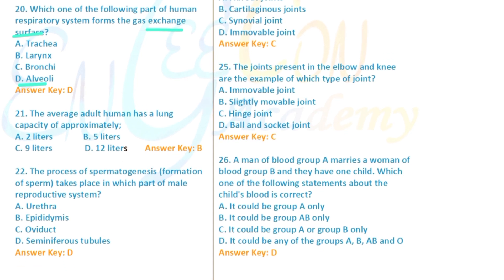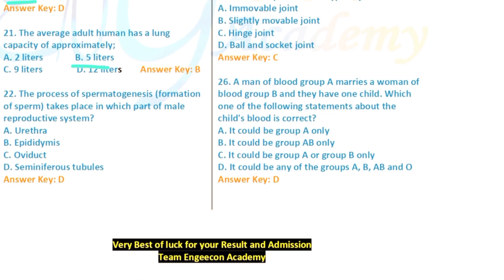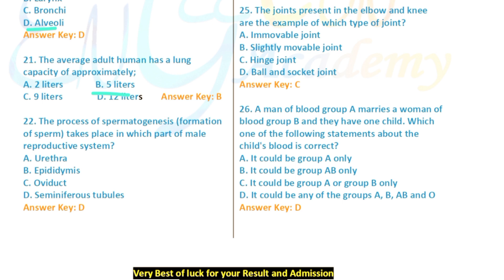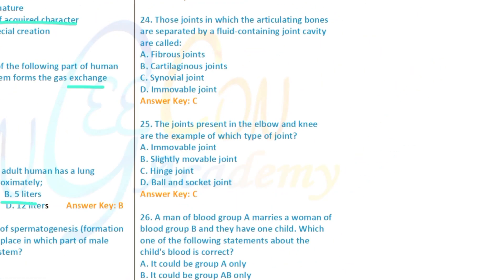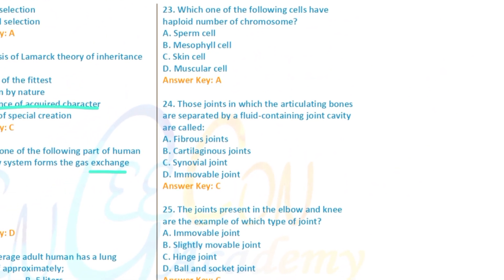The average adult human has a lung capacity of approximately 4–5 liters. Question: The process of spermatogenesis — sperm formation — takes place in which part of the male reproductive system? The answer is the seminiferous tubules, which is ticked.